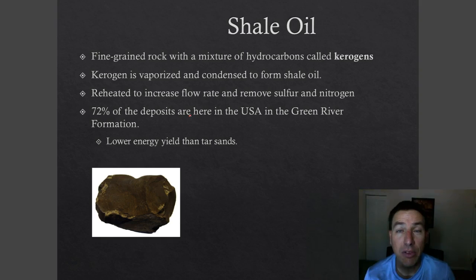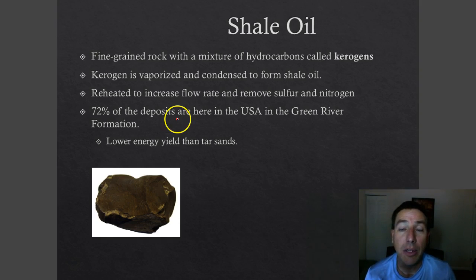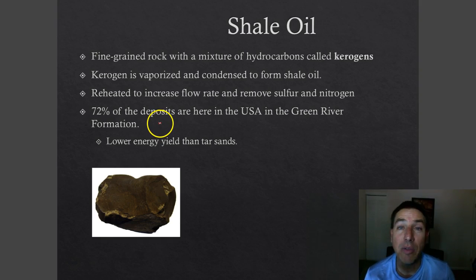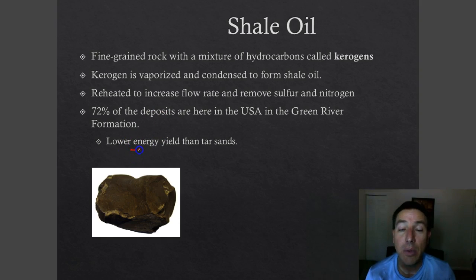The United States has a lot of shale oil — in fact, 72 percent of the world's deposits of oil shale are found here, mostly in North Dakota. Whole towns have been built up around fracking operations in North Dakota, which is one reason why in 2014 we actually have a glut of oil. Shale oil does have a low energy yield, even lower than tar sands, because of the drilling and fracking operations required.